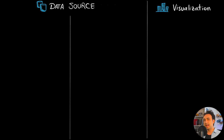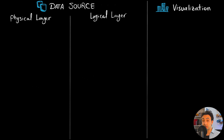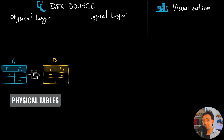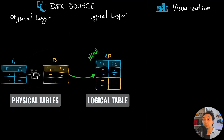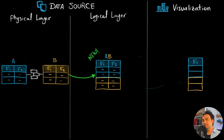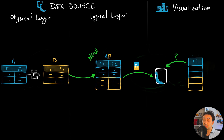Now let's understand how union works in Tableau. Union is very similar to join in the physical layer. We have tables A and B, and once we do union, Tableau creates a new combined logical table where it combines the rows of both tables. At the visualization level, when we take a field, Tableau sends a query to the data source, which asks the logical table to get the data and presents it as a visualization.